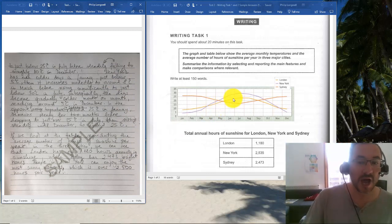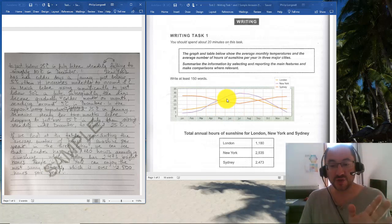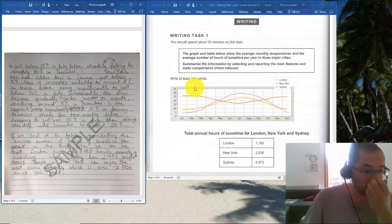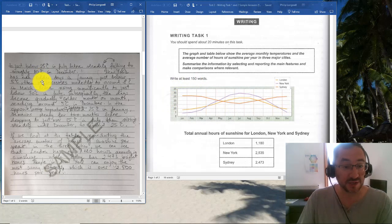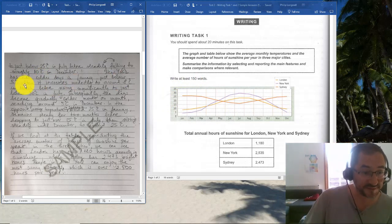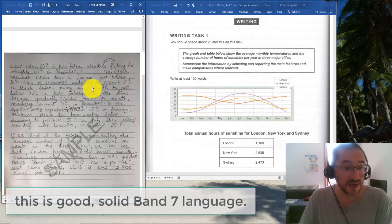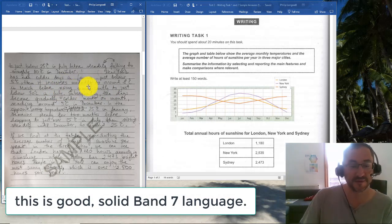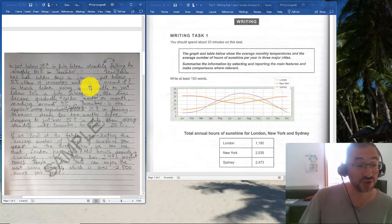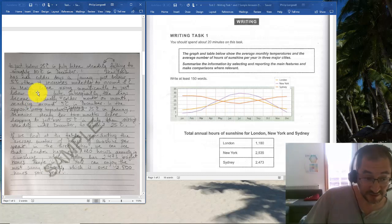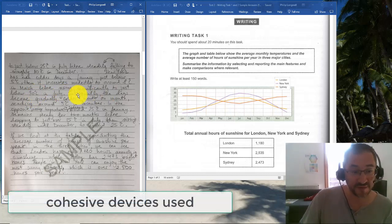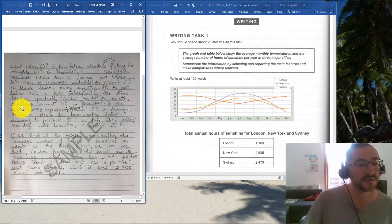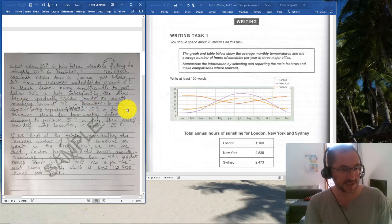Good. Then you go on to New York: even colder days. So you're comparing New York and London. In general it's good. Just below 5 degrees, then it increases modestly to around 8 degrees in March before rising significantly—this is good language, you're already around 7 by using things like rising significantly—to just below 30 degrees in July. Subsequently—a good cohesive device, you're linking—the days become gradually colder month by month, reaching around 5 degrees in December. This is good, this is descriptive, you're taking each city one by one.